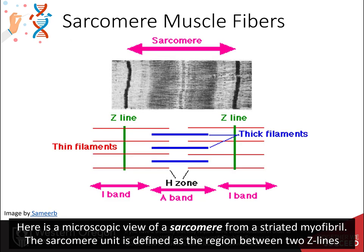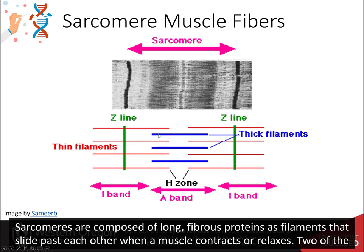Here is a microscopic view of a sarcomere from a striated myofibril. The sarcomere unit is defined as the region between the two Z lines. Sarcomeres are composed of long fibrous proteins as filaments that slide past each other when a muscle contracts or relaxes.